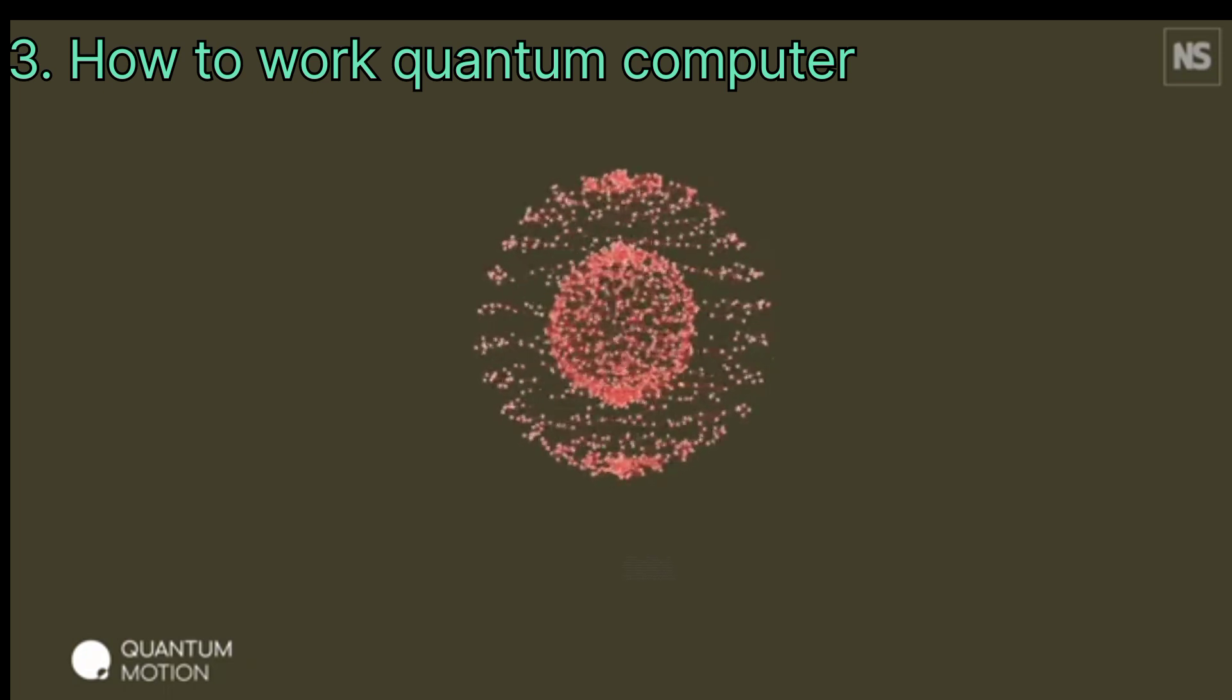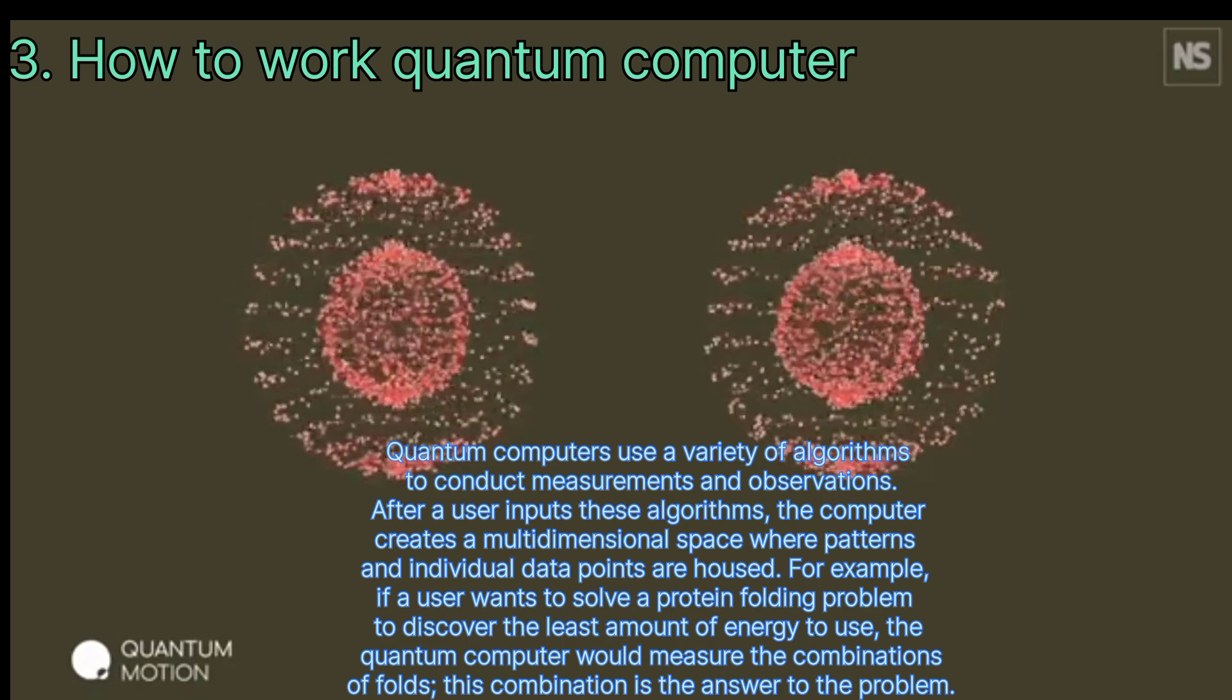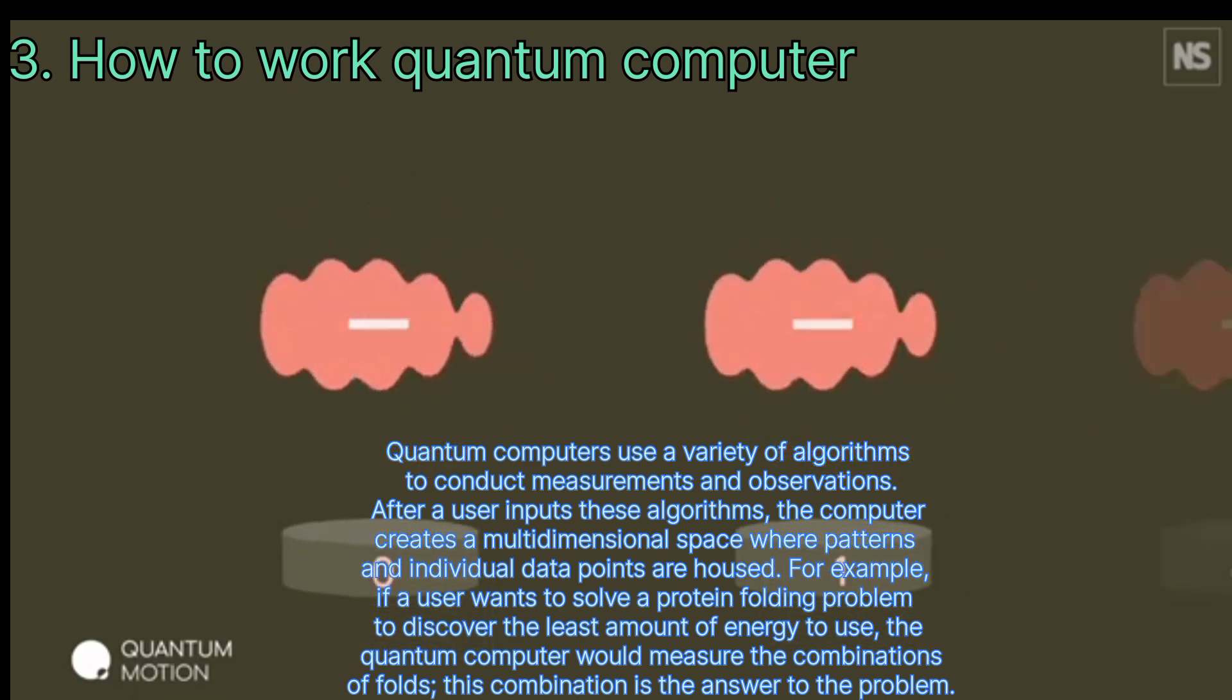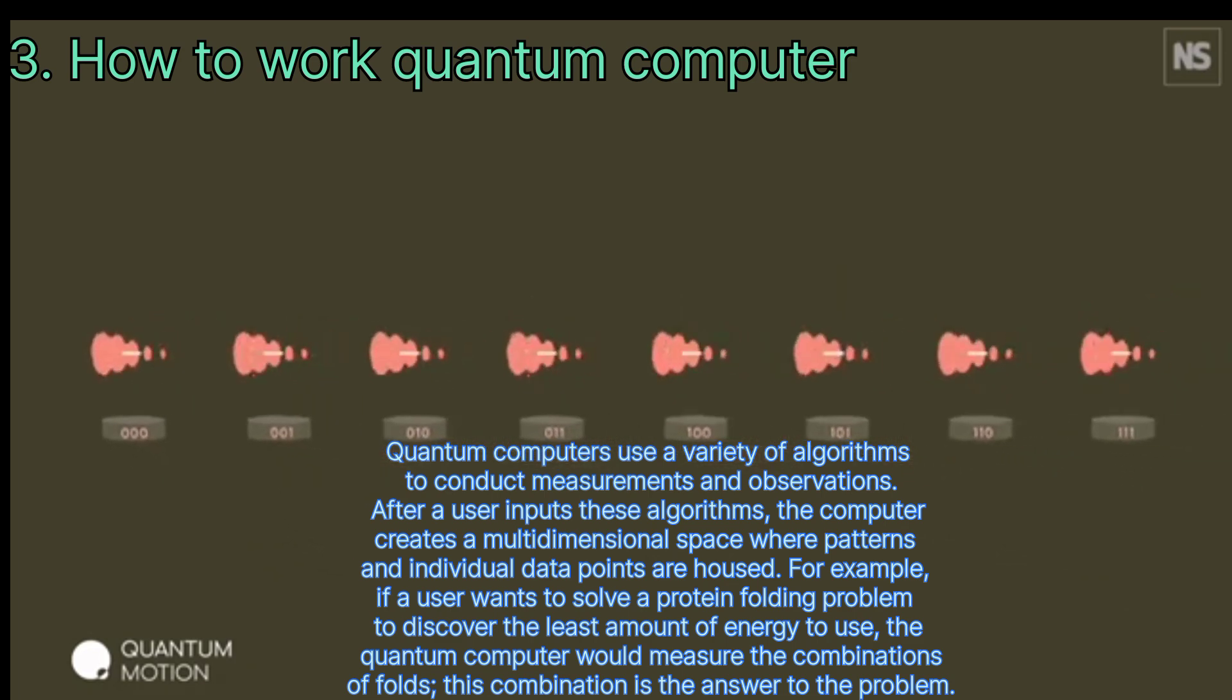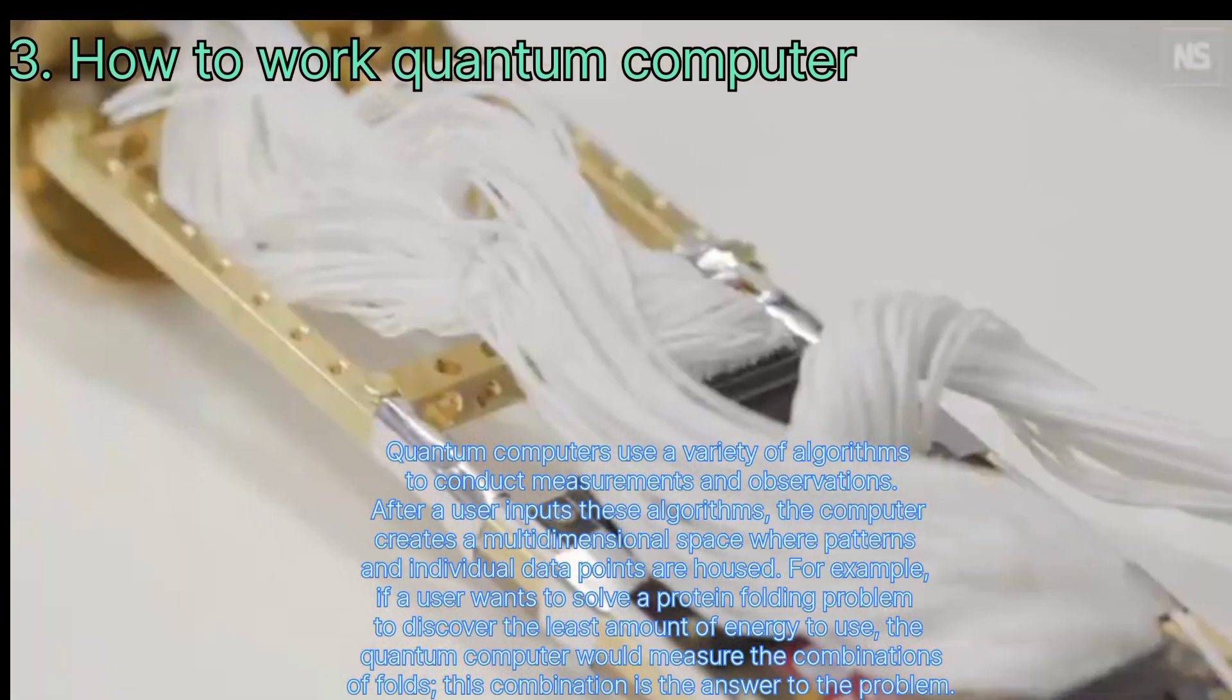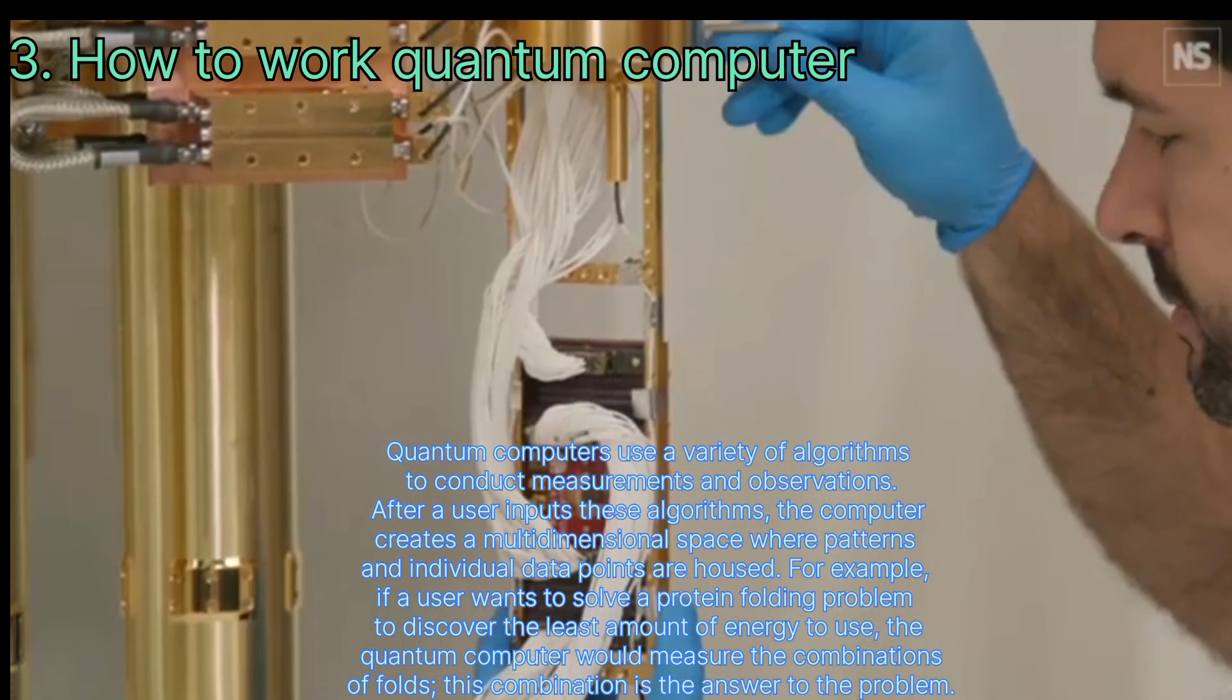Quantum computers use a variety of algorithms to conduct measurements and observations. After a user inputs these algorithms, the computer creates a multidimensional space where patterns and individual data points are housed. For example, if a user wants to solve a protein folding problem to discover the least amount of energy to use, the quantum computer will measure the combinations of folds. This combination is the answer to the problem.